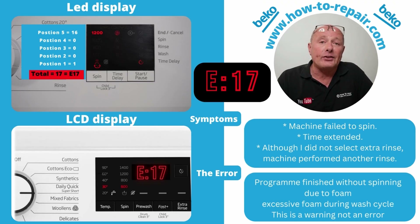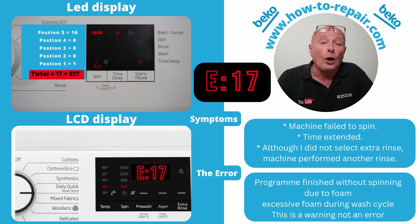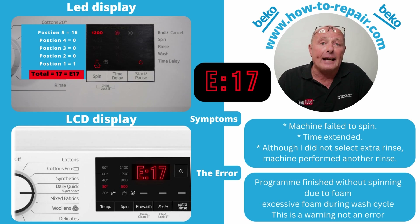Error code 17 is not actually an error — it's a warning only available in diagnostic mode to tell engineers that the customer is using too much soap powder or liquid. This causes excess foaming inside the drum, which can cause sensors to give false readings. E17 is displayed on the LCD as E17; on the LED version, position 5 (the highest spin speed) and position 1 (no spin) are illuminated, giving a combined value of 17.